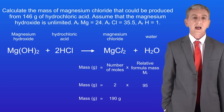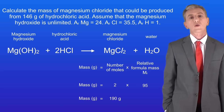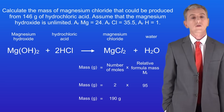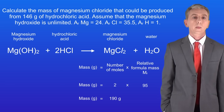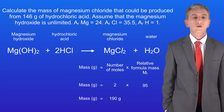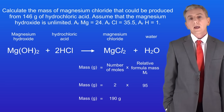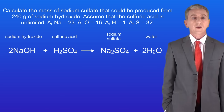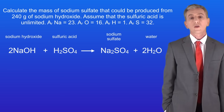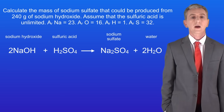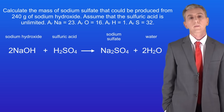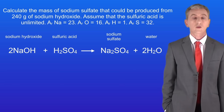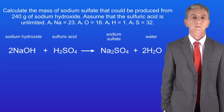So as you can see, tackling these kinds of questions is relatively straightforward. Here's one for you to try. Calculate the mass of sodium sulfate that could be produced from 240 grams of sodium hydroxide. Pause the video now and try this one yourself.